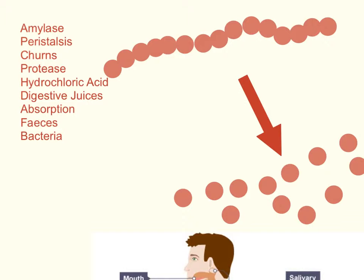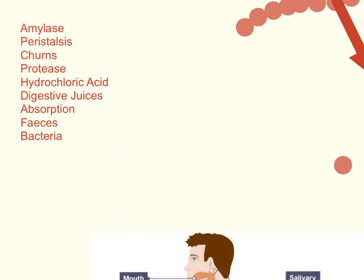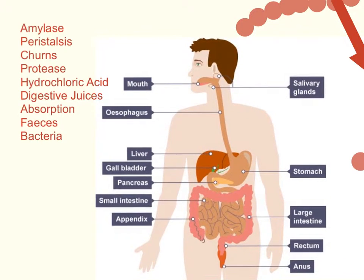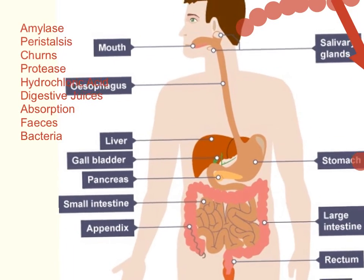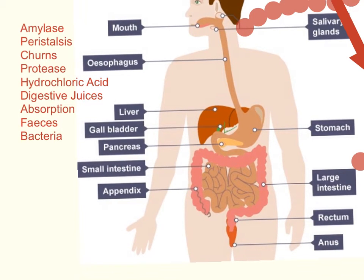That is the whole point of digestion: to break down really big molecules into smaller molecules that are soluble and can then pass into the bloodstream. That's where we want the food — in our bloodstream so our blood can carry it all around the body.